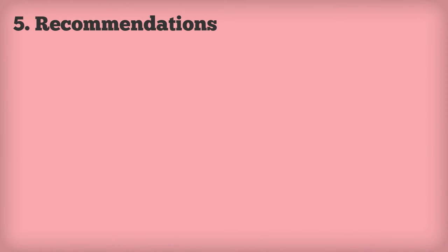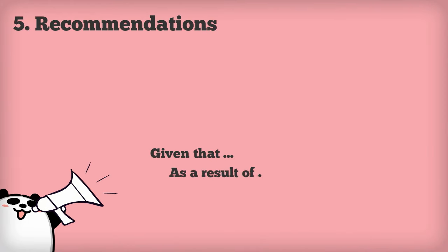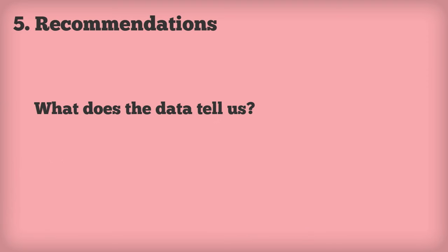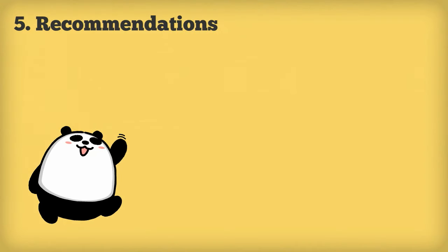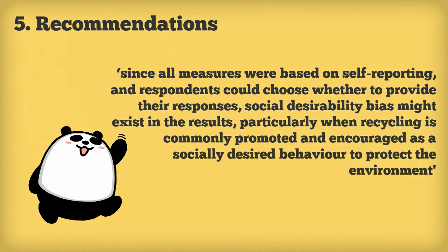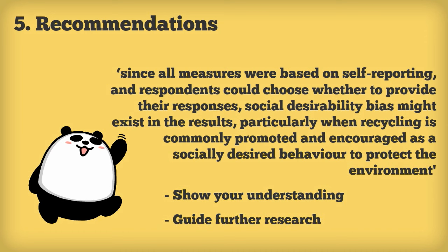Next, we come to the recommendation section. This does exactly what it says — this is where we tell the reader what we recommend. Not only what does the data tell us, but what doesn't it tell us? For example, since all measures were based on self-reporting and respondents could choose whether to provide their responses, social desirability bias might exist in the results, particularly when recycling is commonly promoted and encouraged as a socially desired behavior to protect the environment. This would show the reader that we understand the information that has been given to us, and that we know our work is not perfect, which can help to inspire future researchers to find out more.